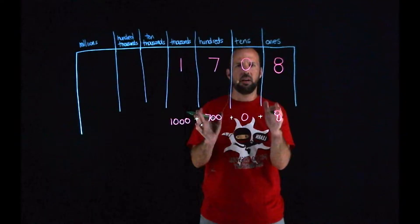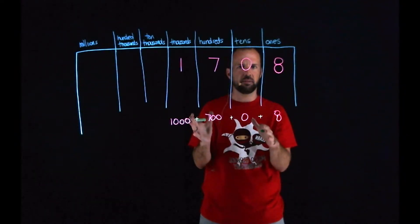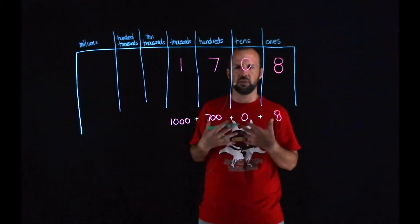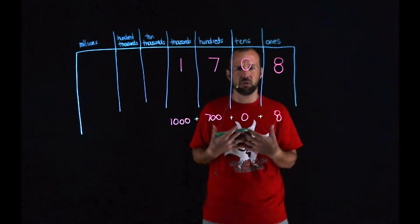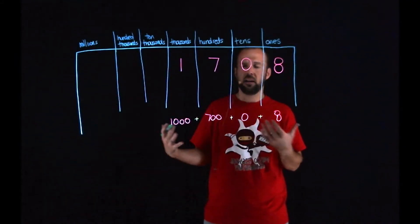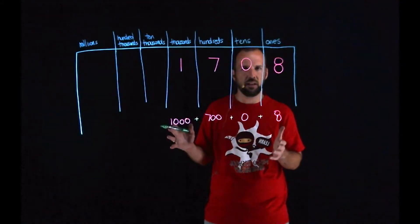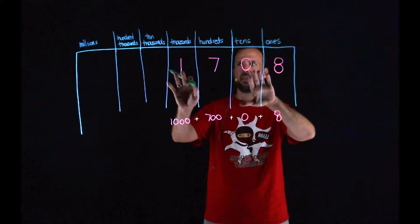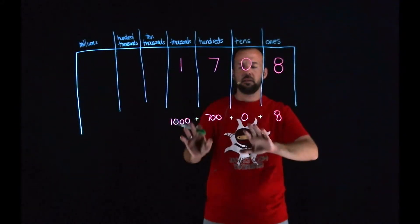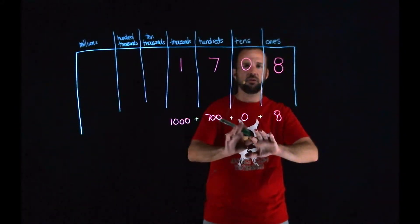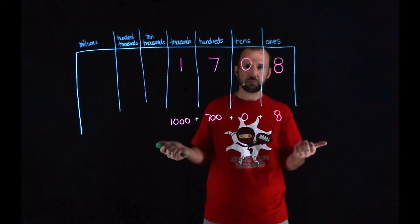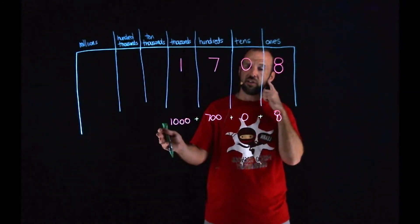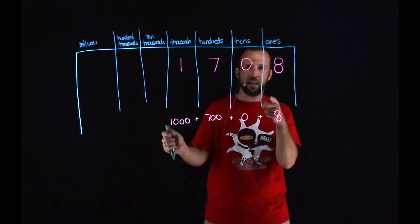It's the same value — I just wrote it in two different ways. It's kind of like having an alter ego, right? If you think about superheroes — when I'm a teacher by day my name is Mr. Walker, but when I'm a superhero at night my name is Mr. Incredible. Anyway, it's an alter ego. We can say that this is 1,708, and it's also 1,000 plus 700 plus 0 plus 8. Just writing it in expanded form — which is a new vocabulary term.